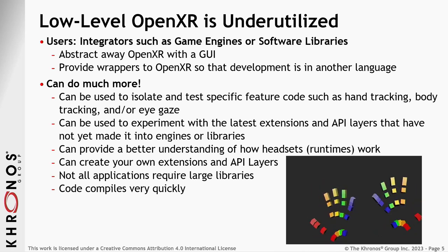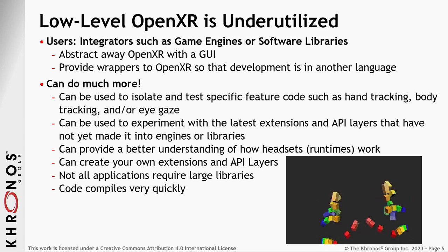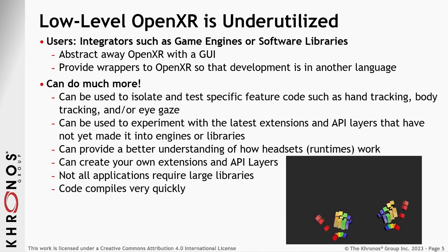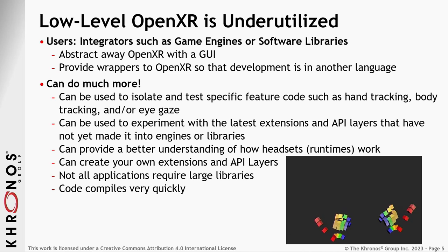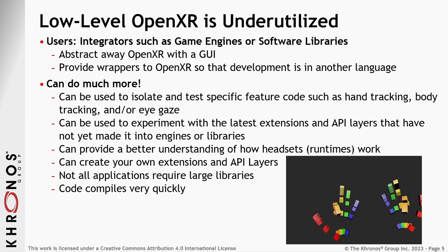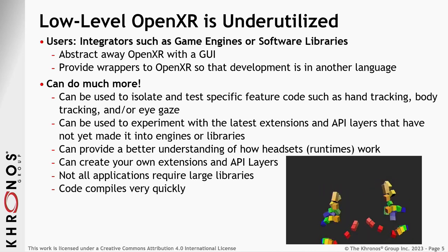You can experiment by adding your own API layers, which let you modify existing functionality. You can even create your own extensions — you do not need to be part of the working group to do that. Because it removes the abstractions, you actually see how the runtime works and learn how OpenXR works. You can identify and report bugs more easily. And not everything requires large libraries — if you're making something very simple, that would be another use case for using OpenXR at a low level.